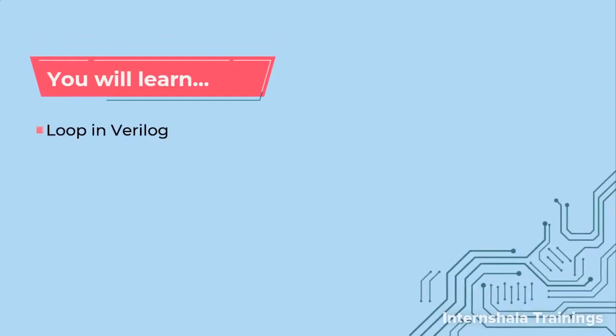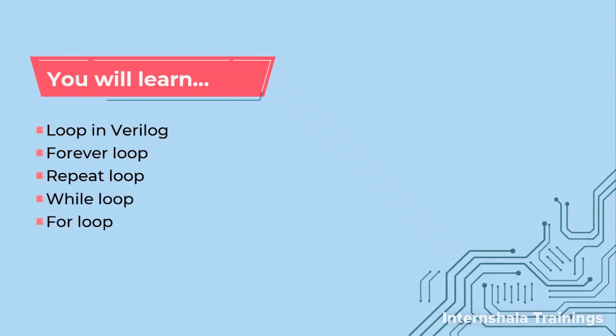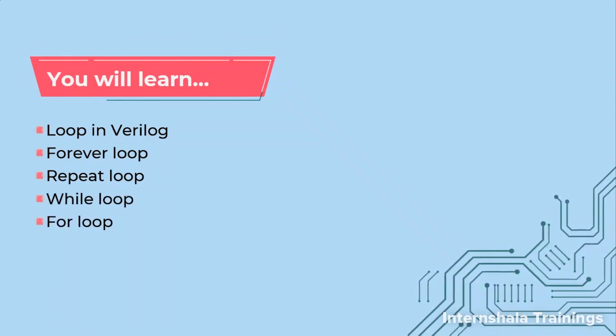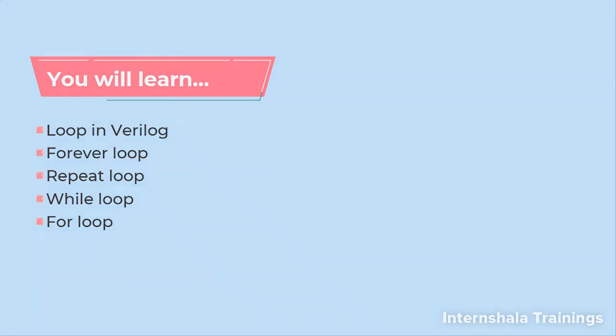We are going to talk about loops in Verilog, and there are four types of loops: forever, repeat, while, and for loop. So this is what we are going to learn in this video, and let us get started.